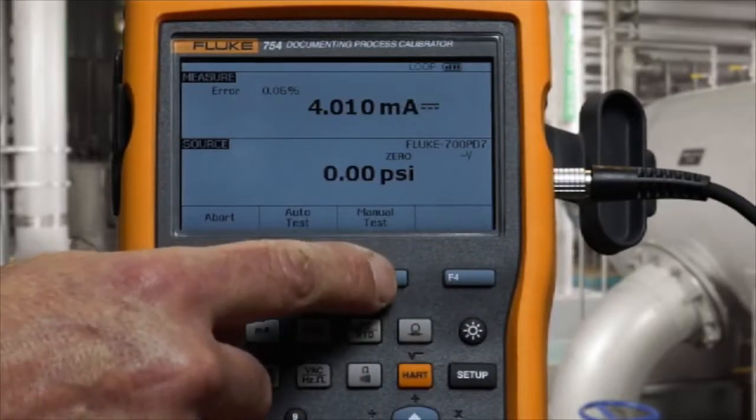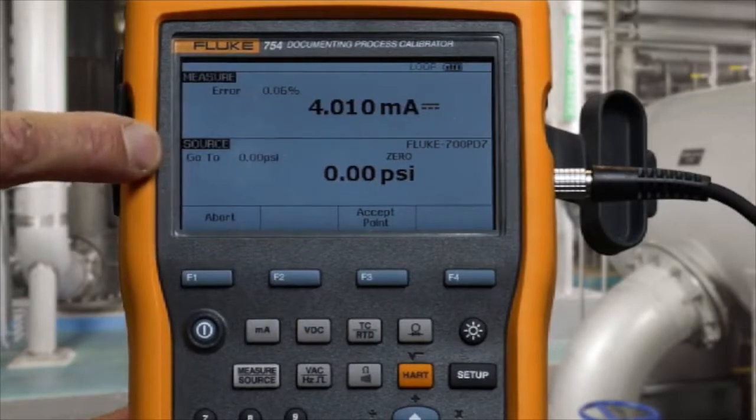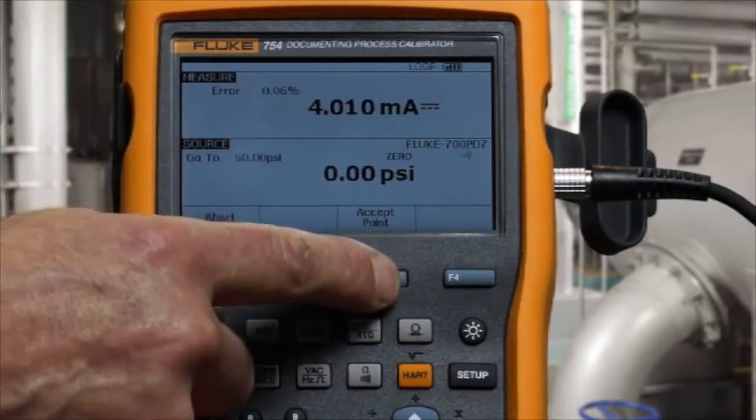When we select manual test, the calibrator will tell us the pressure to apply, and if we have the correct pressure applied, we accept that point.